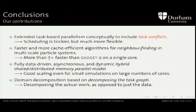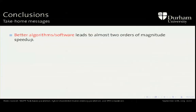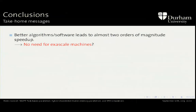Take-home messages. Better algorithms and software gave us almost two orders of magnitude speedup. The same particles, the same physics, the same hardware — 40 times faster. So the big question is: do we really need exascale machines? If we were to move from peta- to exascale, a factor of 40 is halfway there. Get another factor of 40 and you've already overshot the exascale. Do we really need big machines, or do we just need to use the machines we have better?